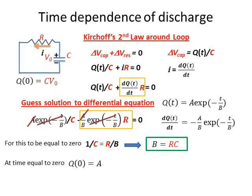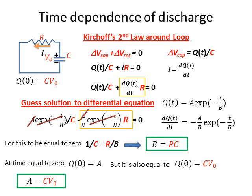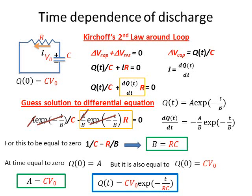At time equal to zero, Q(0) will be equal to A from our guess. But it's also equal to Q at time zero is equal to C times V0, because we had charged the capacitor to a certain voltage V0 times its capacitance. So that is what the charge is at time zero. So A is equal to C times V0.